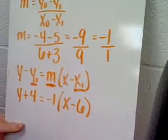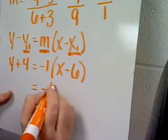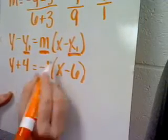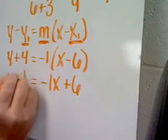Now I'm going to use the distributive property to eliminate the parentheses. Negative 1 times x is negative 1x, negative 1 times negative 6 is positive 6, and then I bring down the y plus 4.